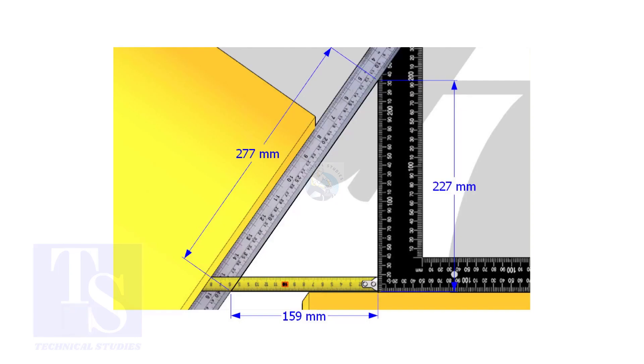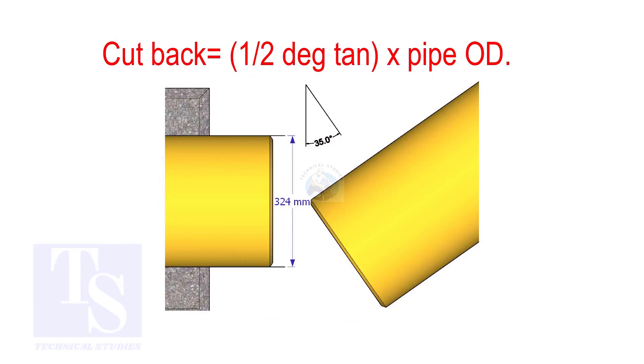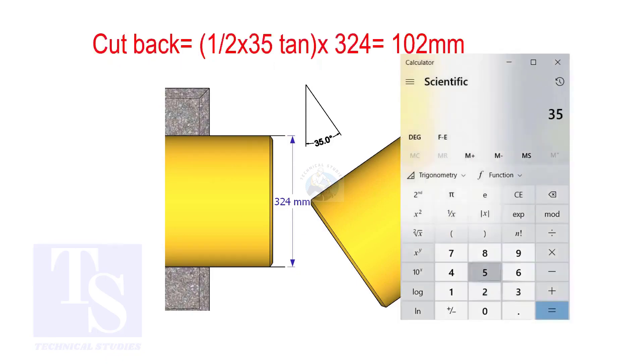How to calculate the cutback of a single cut miter. When it is a single cut, the cutback is half degree tangent multiplied by the OD of the pipe. The answer is 102 millimeters.